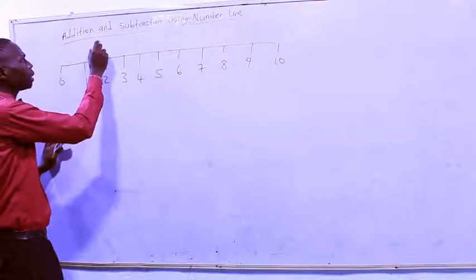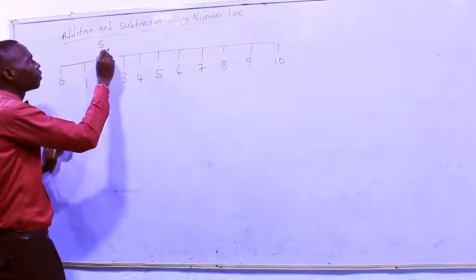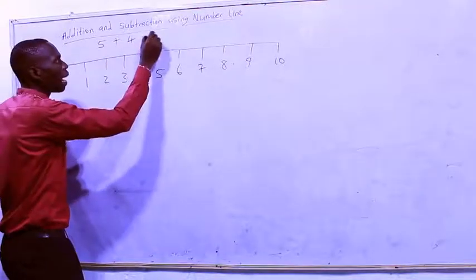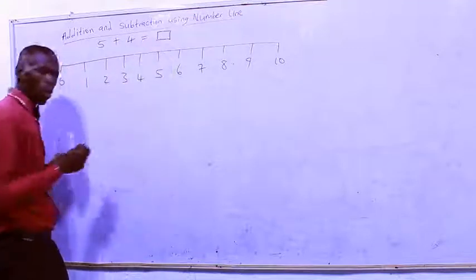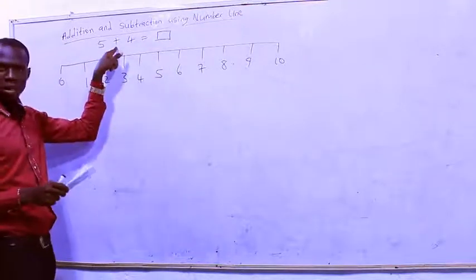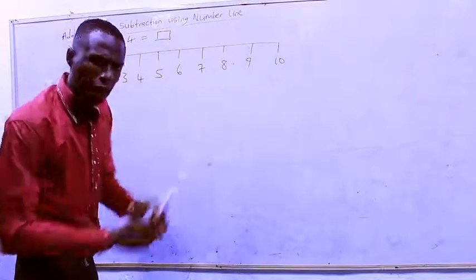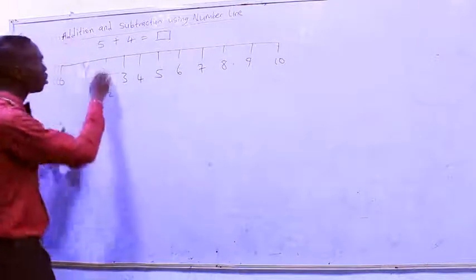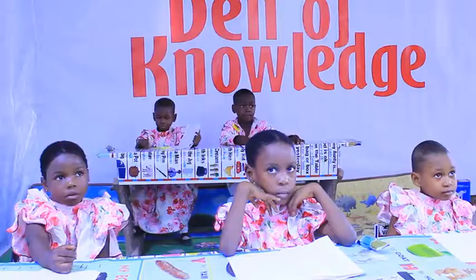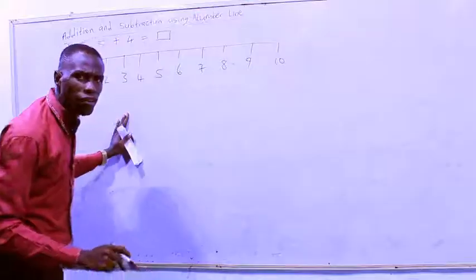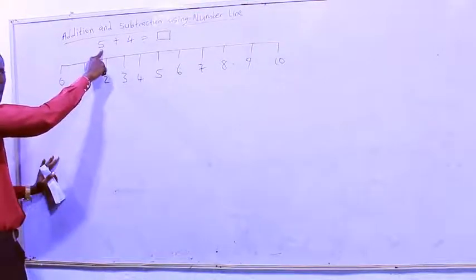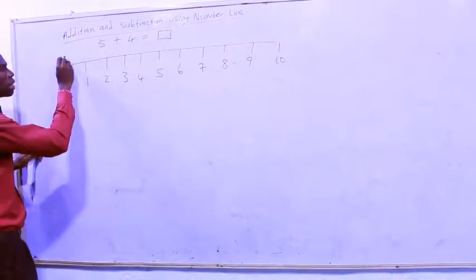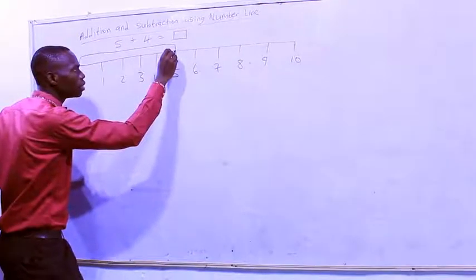Assuming we are given something like five plus four. Five plus four. Remember, if you see a plus sign, it means join them together. If you see a minus sign, it means remove. Now, this is join them together. If you want to use this method, first look at the first number, which is five. Draw a big line and look for five — stop there. This is five.